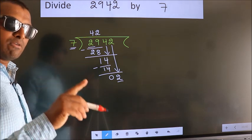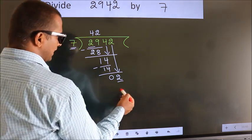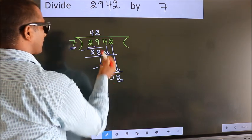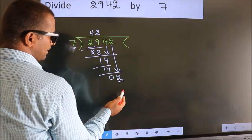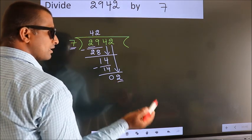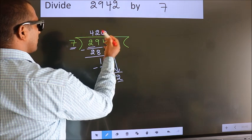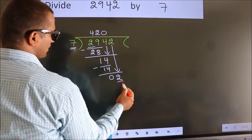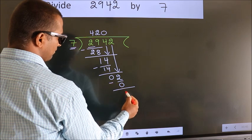Instead of that, what we should think of doing is which number should we take here. If I take 1, we get 7. But 7 larger than 2. So what we do is we take 0 here. So 7 into 0, 0. Now we subtract. We get 2.